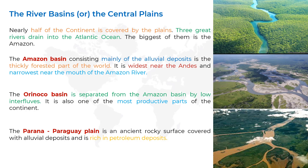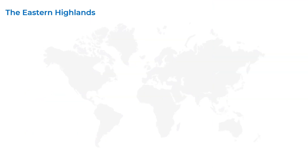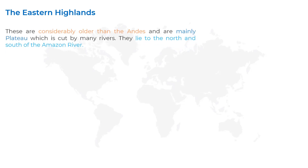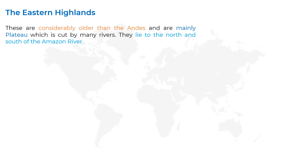The next topic we are going to learn is the Eastern Highlands. Highlands is an area of high or mountainous land. These highlands are considerably older than the Andes and are mainly plateaus cut by many rivers. They lie to the north and south of the Amazon River.